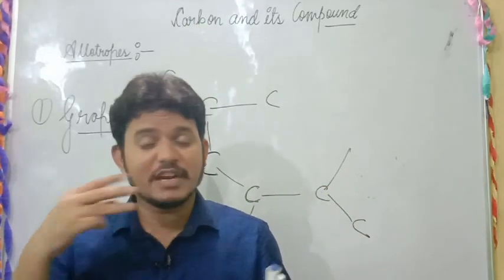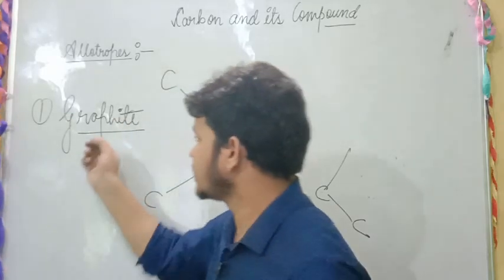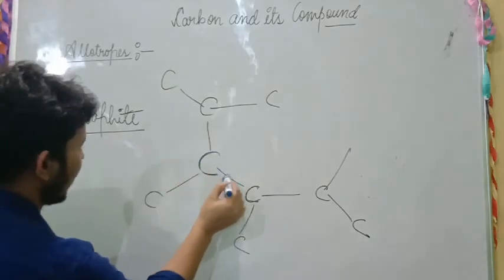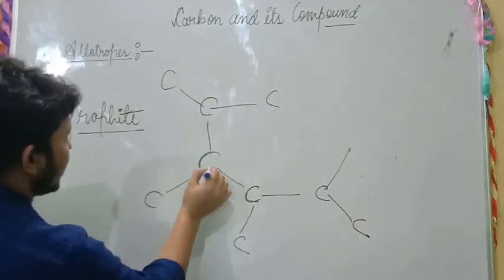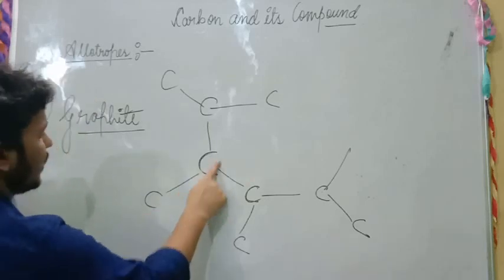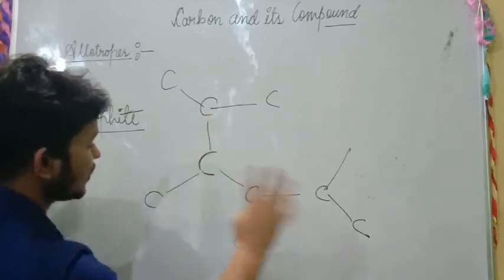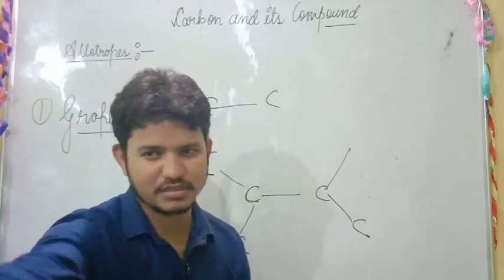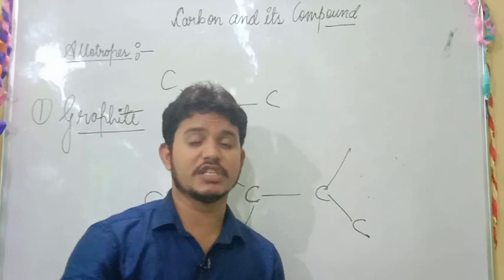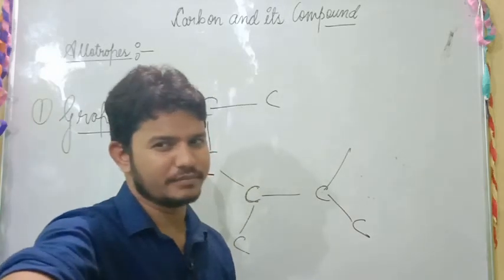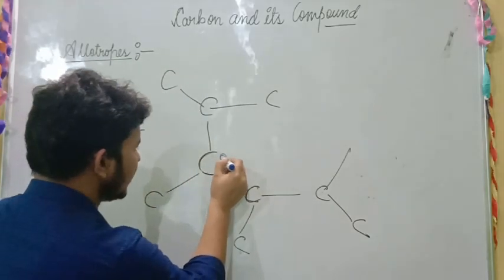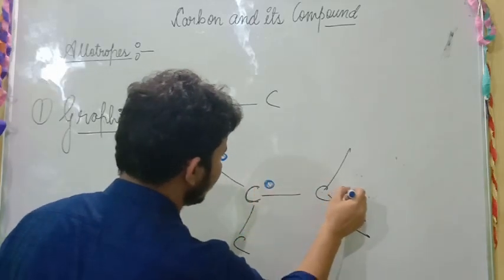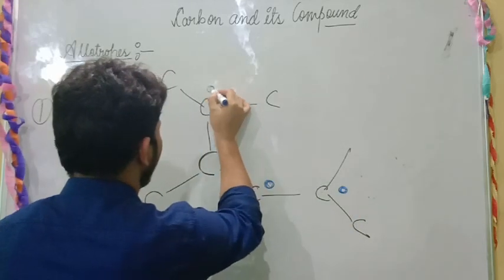Carbon also has different forms of elements. In the first case is graphite. In graphite, its carbon atom is bonded by three other carbon atoms. So we observe that there is one free electron with each carbon atom.